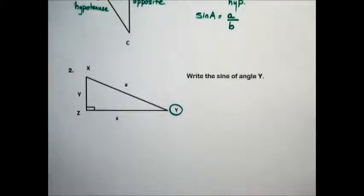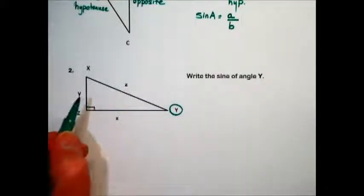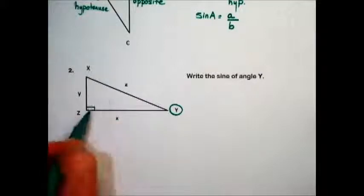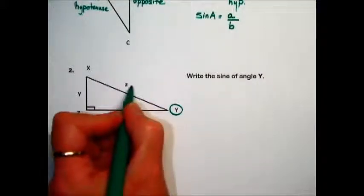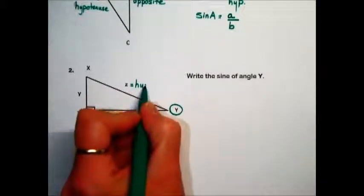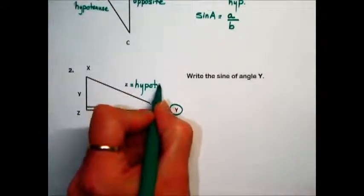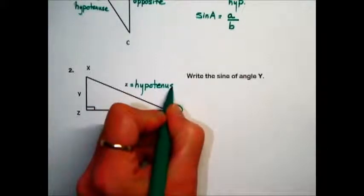Always starting with the hypotenuse, the longest side, the side opposite the right angle. That means this length here, Z, is the length of our hypotenuse.